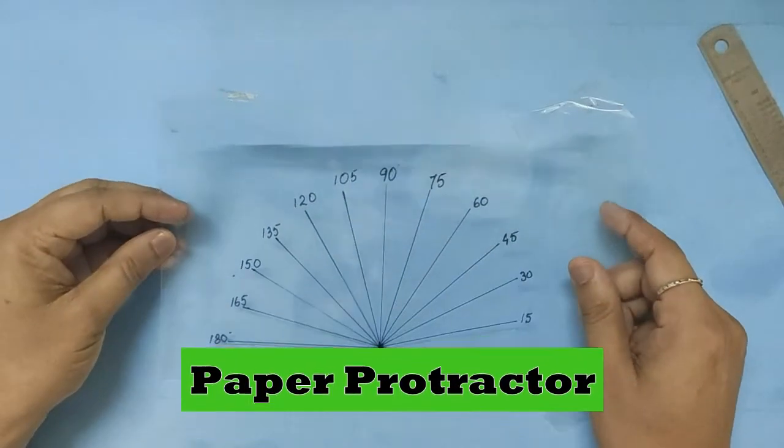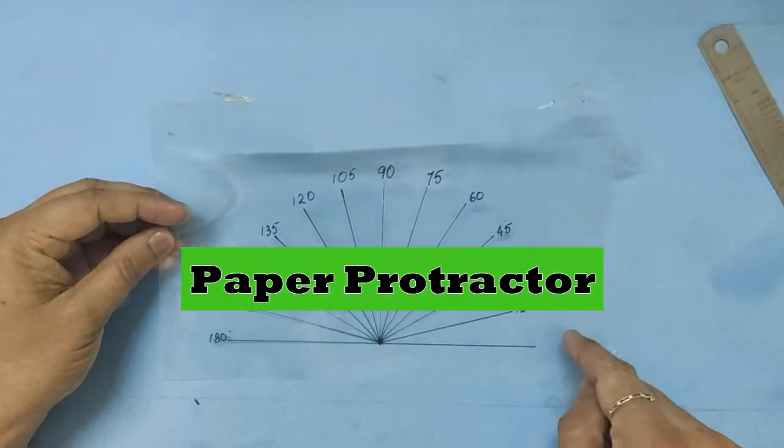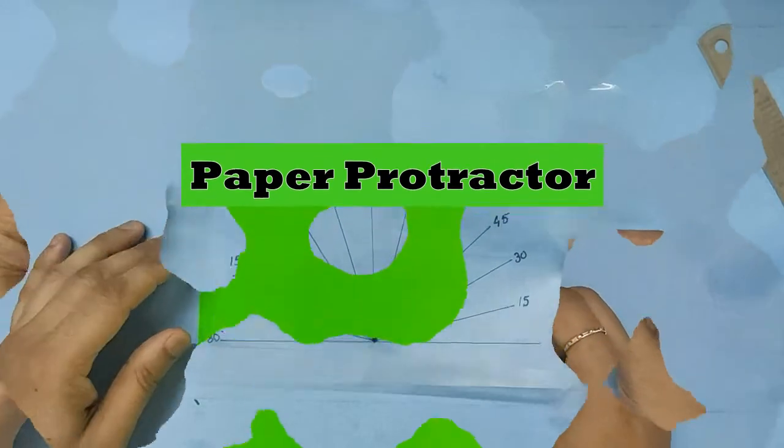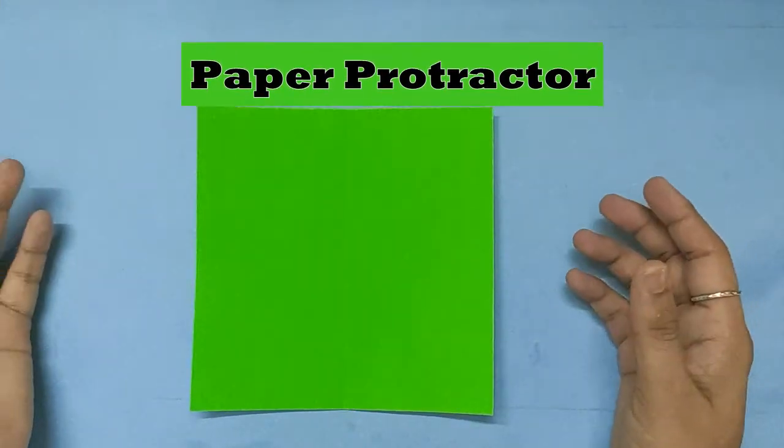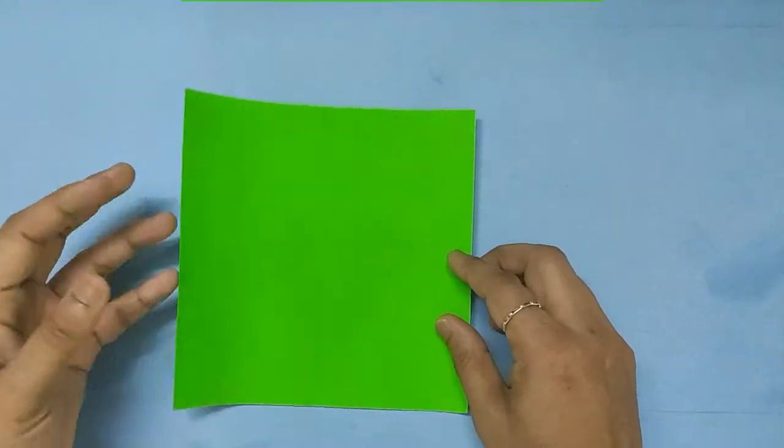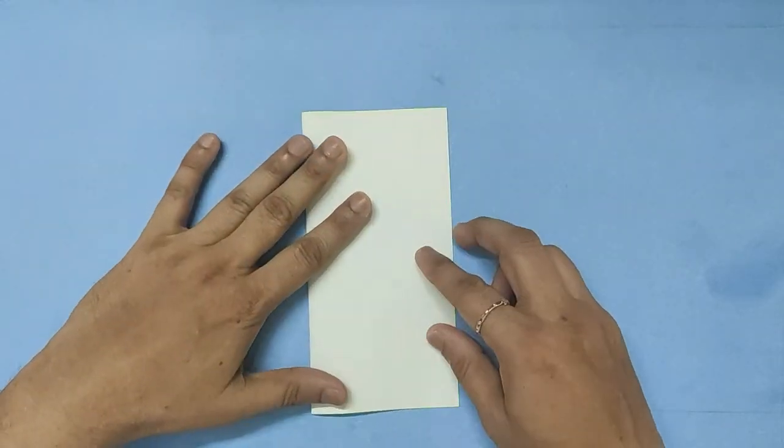Hello friends, we are going to make a paper protractor. We will start with a square paper and make a book fold.